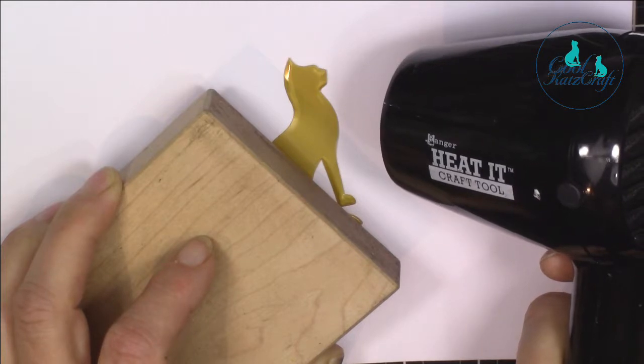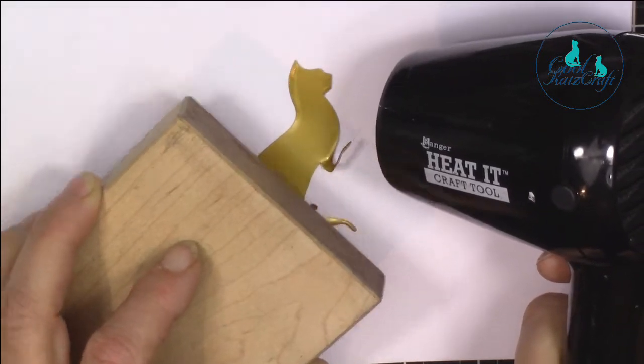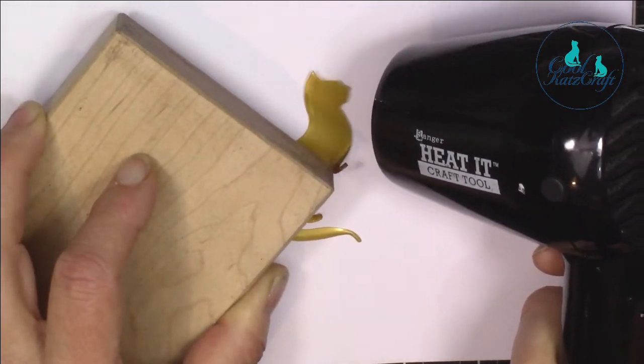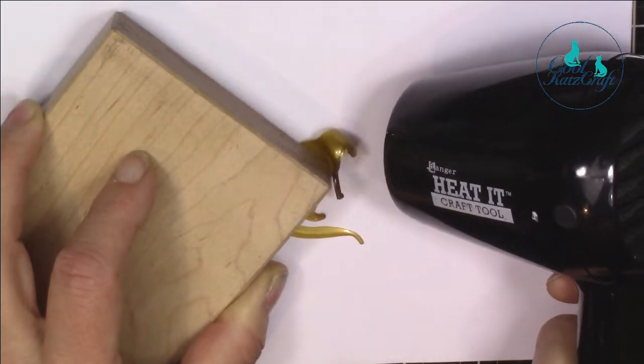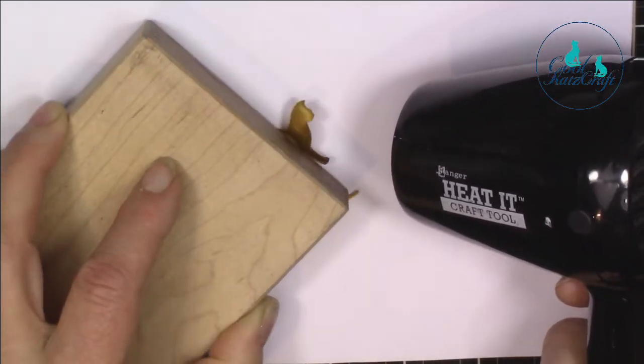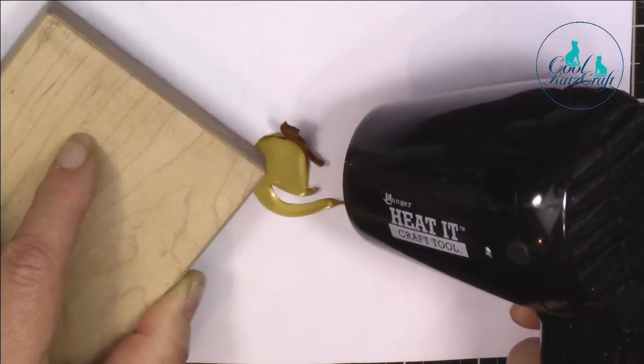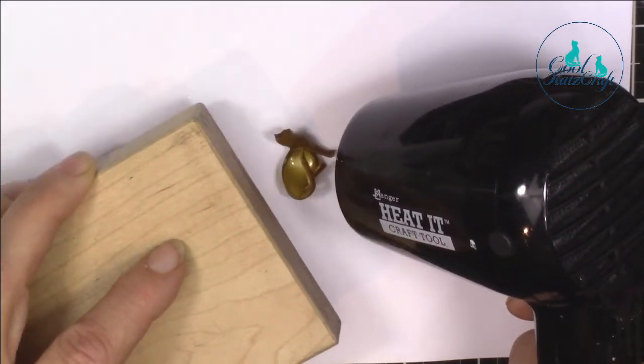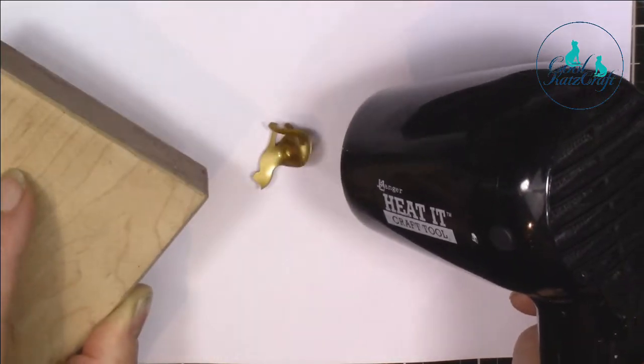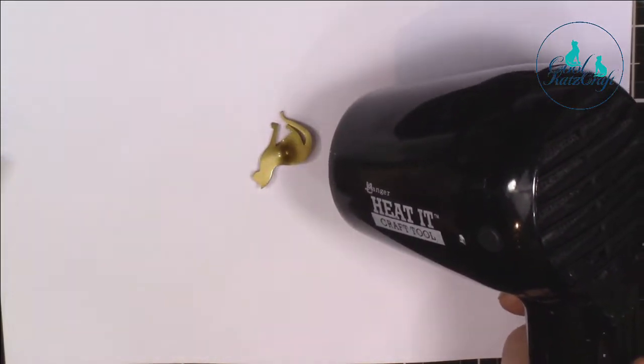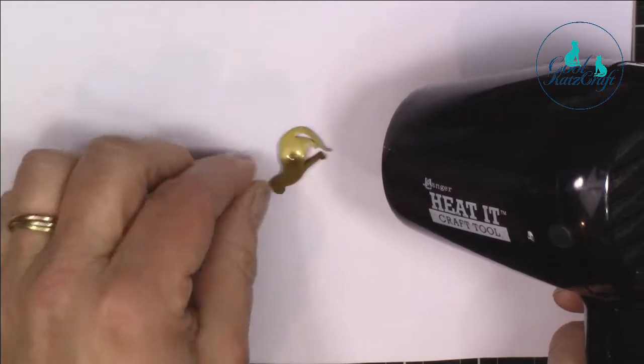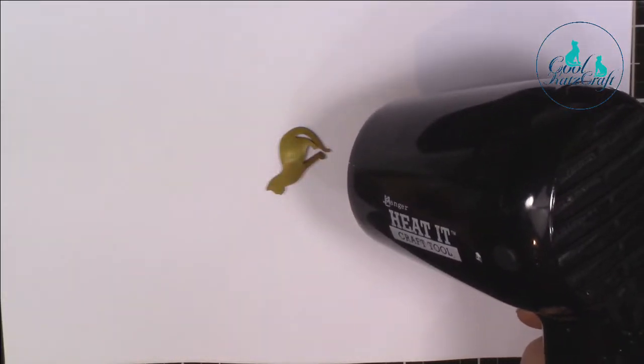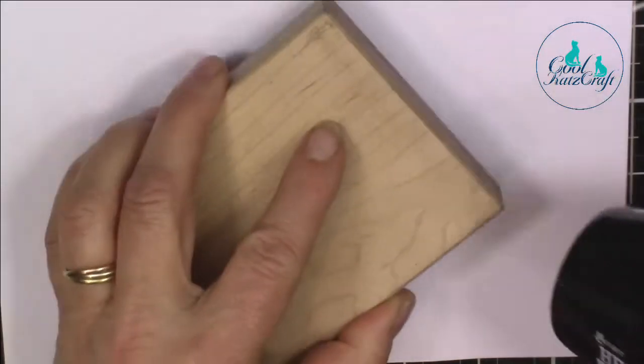I'm using a hairdryer heat tool for control and a wooden block which helps contain some of the distortion of the cat as you can see. It can be a bit scary but keep going. I'm just gently pushing the wooden block over to flatten it.